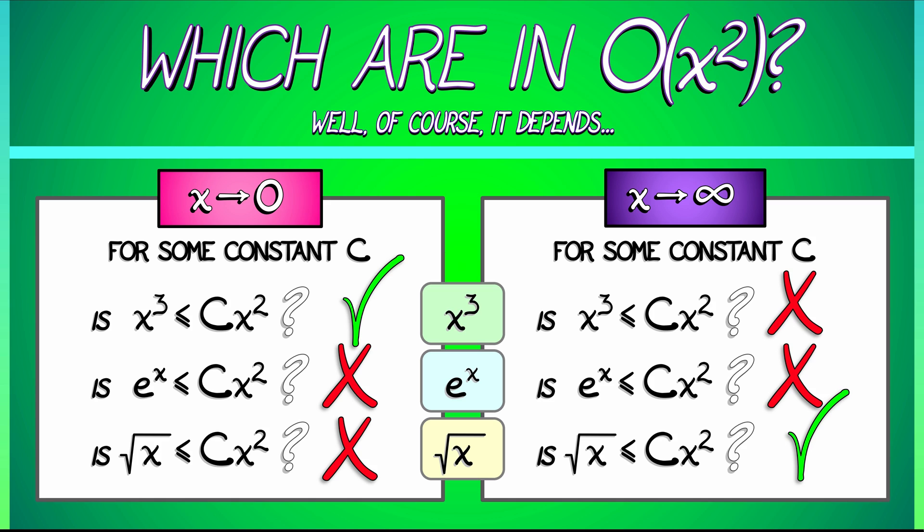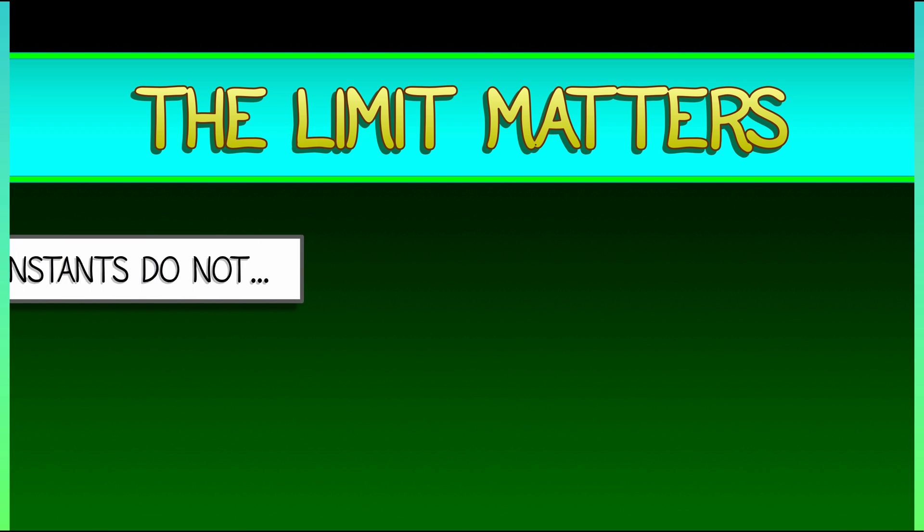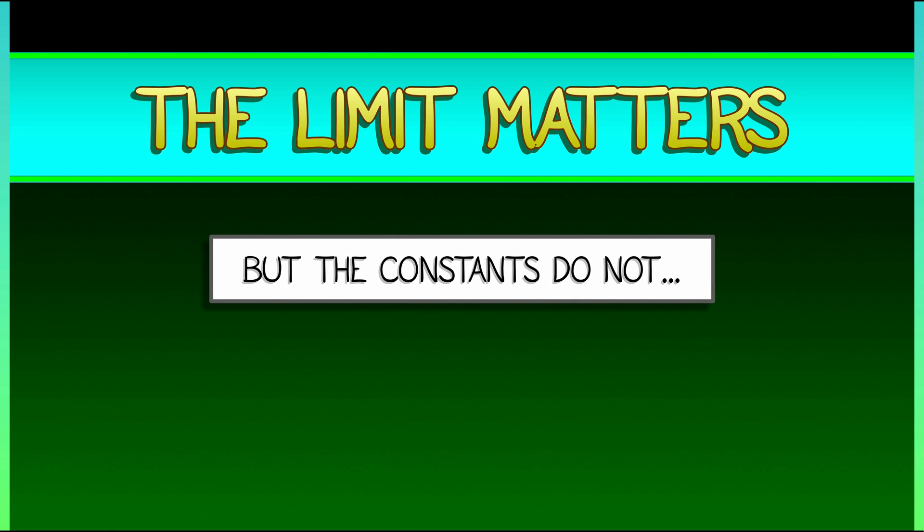I'm going to leave it to you to find an example of a function that is in big O of x squared in both limits. Now, as we have seen, the limit matters, but the constants do not. Notice that in all these examples, we're not caring about what these constants actually are.